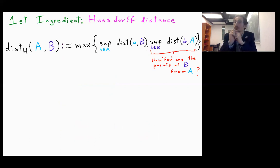The second one answers the question, how far are the points of B from A? So in this way, when the Hausdorff distance between A and B is small, we can warranty that every point of A is near some point of B and that every point in B is near some point of A.